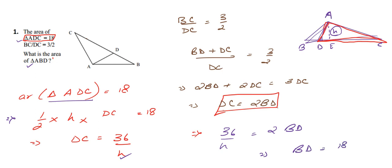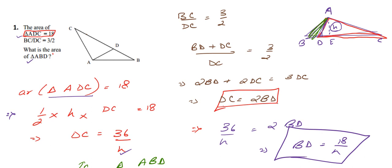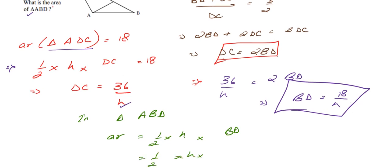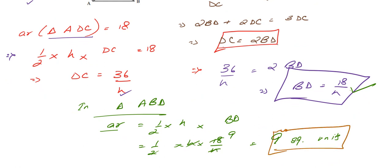So BD equals 18 by H. Now we can directly find the area of triangle ABD. Area of triangle ABD equals half times height H times base BD. Substituting BD equals 18 by H, the H cancels out, and 2 cancels with 18, leaving us with 9. So 9 square units is the answer — that is the area of triangle ABD.